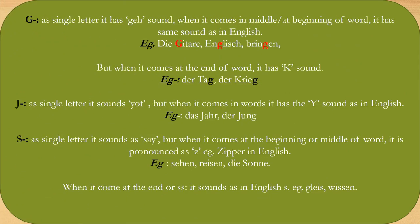The letter G: as a single letter in German, it has the 'Ge' sound. When it comes in the middle or at the beginning of a word, it has the same sound as in English. For example: Gitarre, Englisch, bringen. When it comes at the end of a word, it has a K sound. For example: Tag, Kreig.